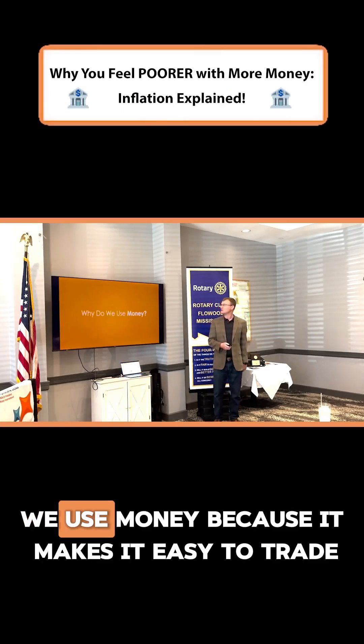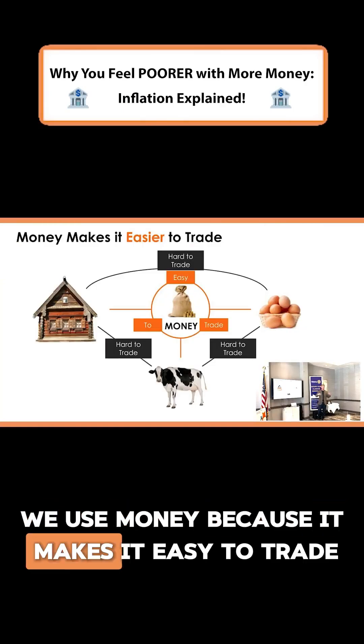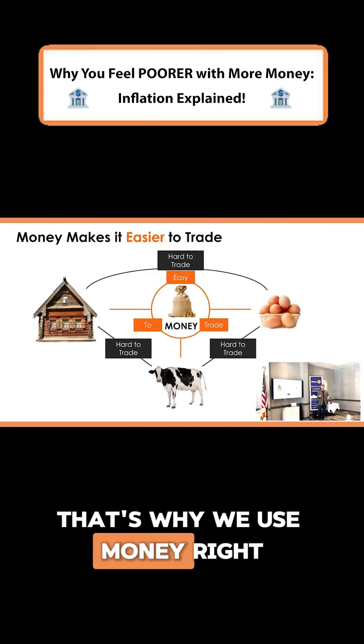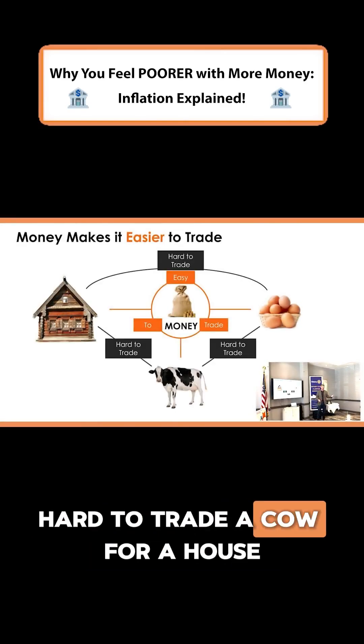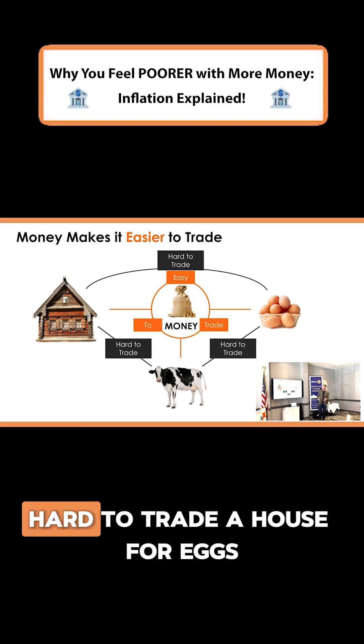So why do we use money? We use money because it makes it easy to trade. It's hard to trade a cow for eggs, hard to trade a cow for a house, hard to trade a house for eggs.